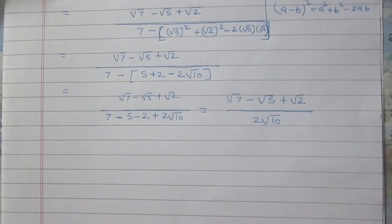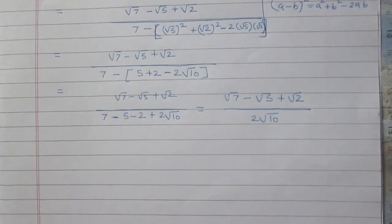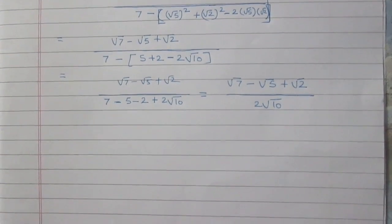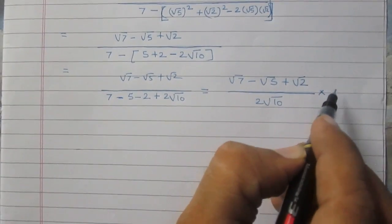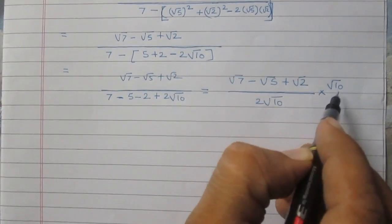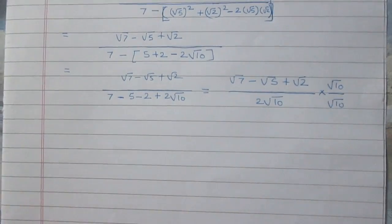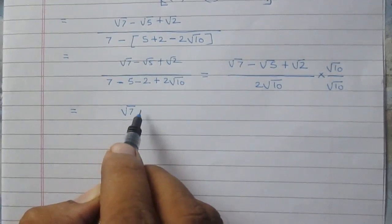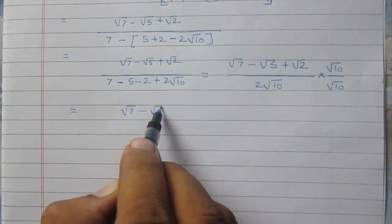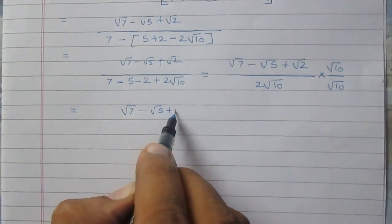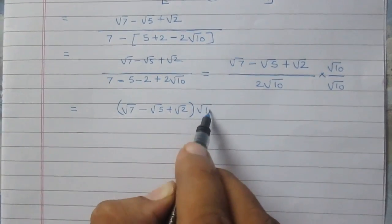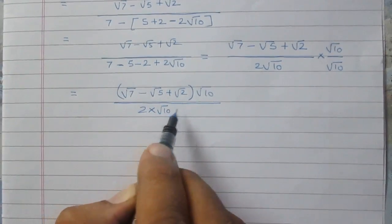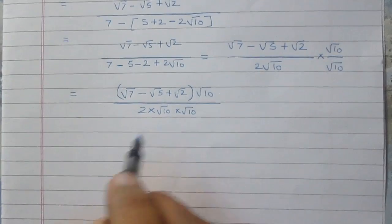Once again we have a fraction with an irrational denominator, so we must rationalize it once more. This time we will multiply both numerator and denominator by square root of 10. The numerator becomes (square root 7 minus square root 5 plus square root 2) times square root 10, and the denominator becomes 2 times square root 10 multiplied by square root 10.